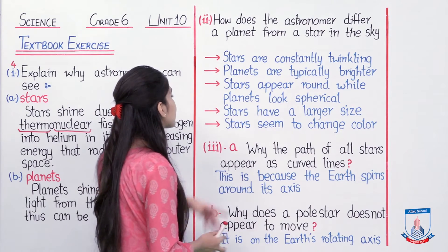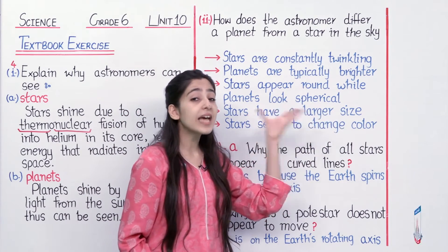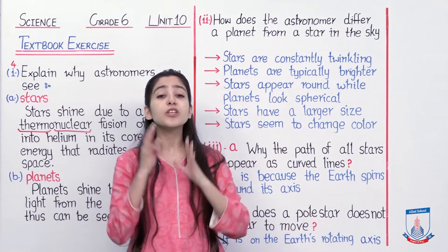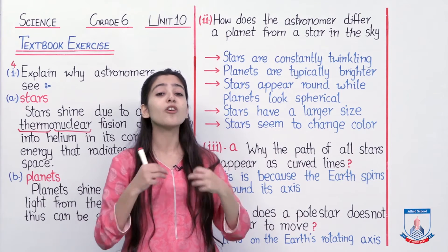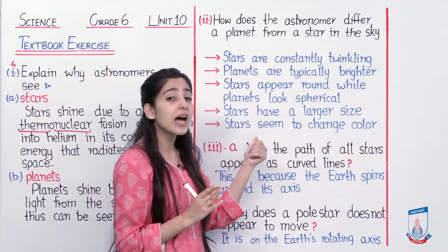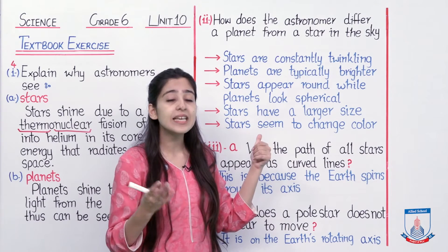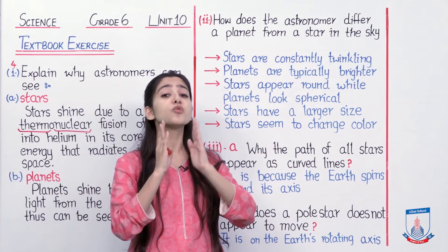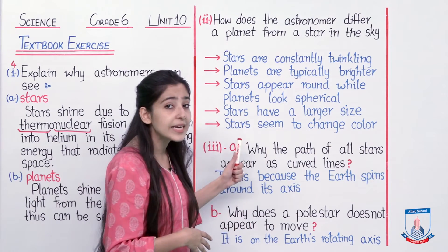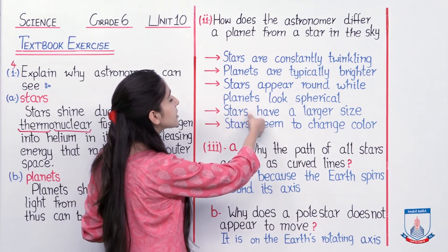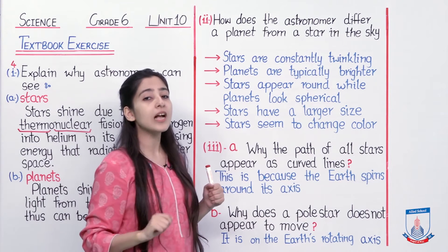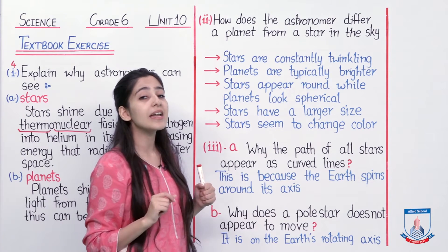Then we have the technique that stars have a larger size. Agar size mein bhi dekha jaaye, toh hamaara jo star hoga, woh planet se size mein humein bada nazar aayega — kyunki yahan par reactions ho rahe hain aur light radiate ho rahi hai, isi liye jo size hai woh yahan se dekhne mein humein larger lagega stars ka. Waise toh stars are of different sizes, magar yahan pe jab hum dekhenge as compared to a planet, so humein star ki shape badi nazar aayegi as compared to a planet. So aapne dekha ke planets jo hain, woh stars ki nisbat size mein chhote honge magar brighter honge. Yeh techniques hain jo aake kaam aa sakti hain to differentiate between a star and a planet.